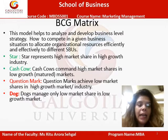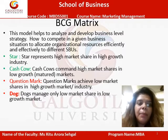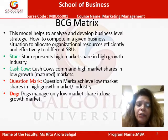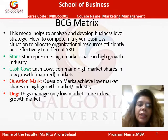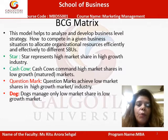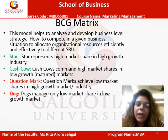The BCG matrix clearly divides various products into categories. There are products which fall into the category of a star, a cash cow, a question mark, and a dog. A star means high market share in a high growth industry. Cash cows command high market shares in low growth or mature markets. Question marks achieve low market shares in high growth markets, and dogs manage only low market share in low growth markets.